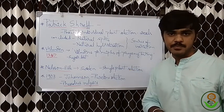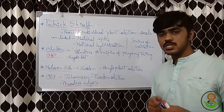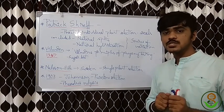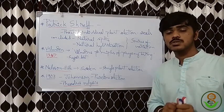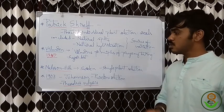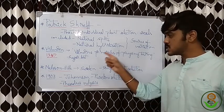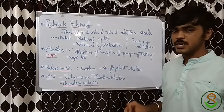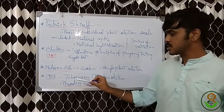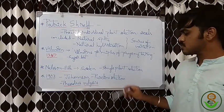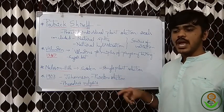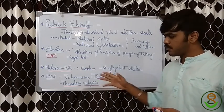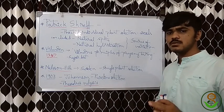The importance of selection among self-pollinated and cross-pollinated crops gained attention after Vilmorin's work. Coming back to pure line selection, the mechanism and scientific ways of doing that were given by Johannsen, who gave a detailed account of it.